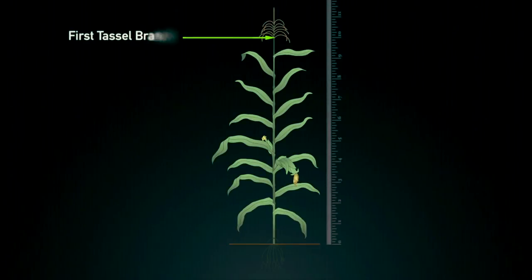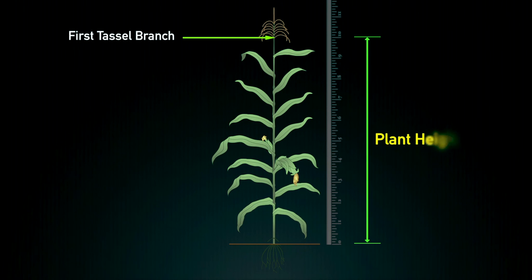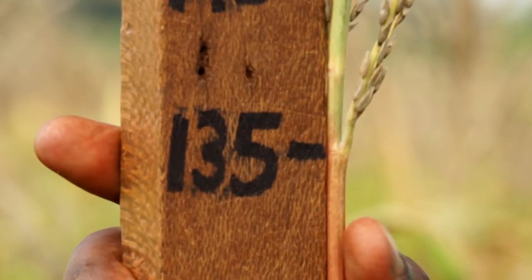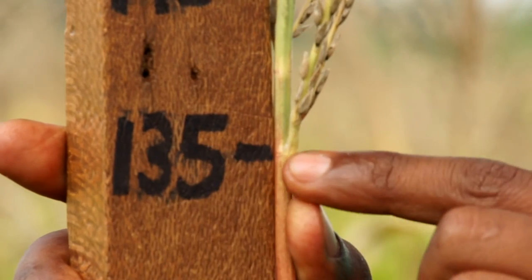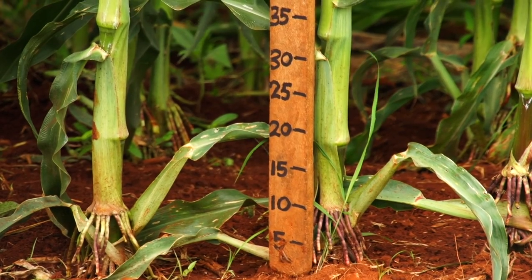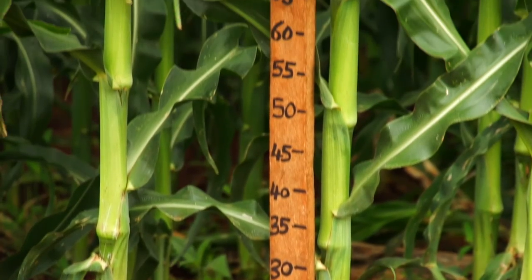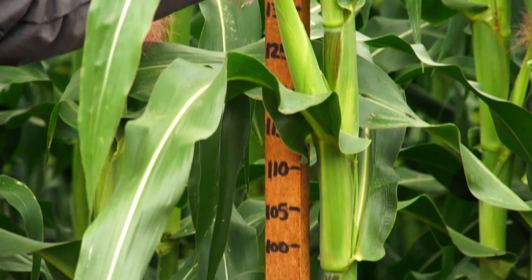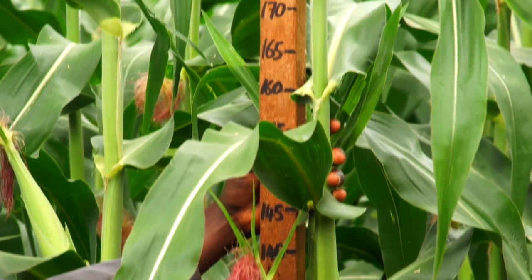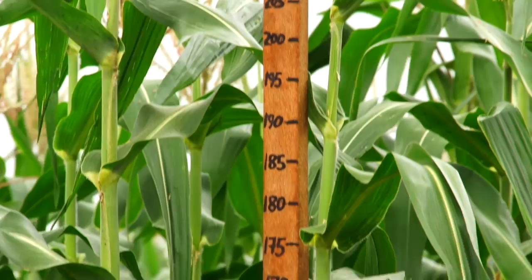Plant height is the distance in centimeters from the base of the maize plant to the first tassel branch. Plant height should be collected from a minimum of five representative upright plants in a plot to obtain an average. Plant height should be measured approximately four weeks prior to harvest from both optimal and stressed trials.